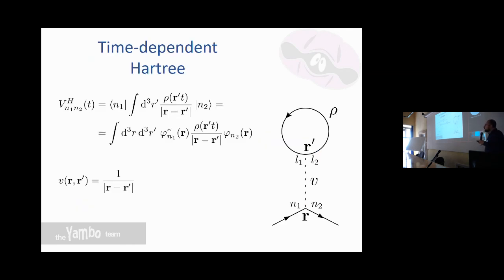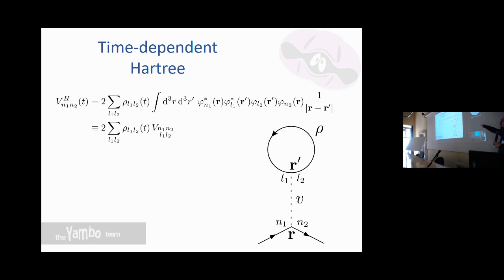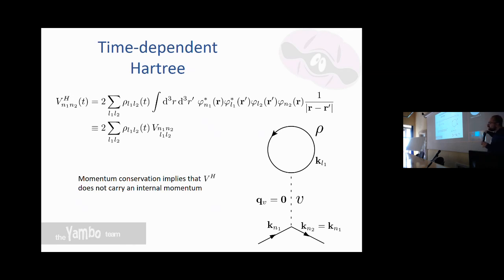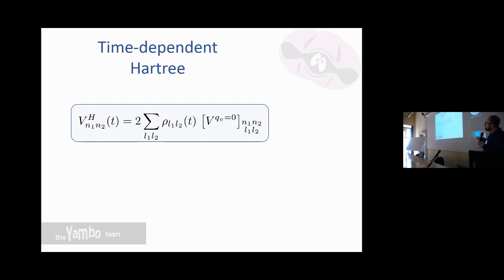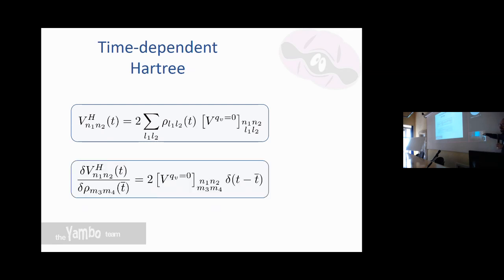For the Hartree potential, we write the full expression in the single-particle basis, expand the density in that basis, and the matrix element of the Coulomb interaction appears. Because of momentum conservation, this Hartree potential does not carry an internal momentum — it just has the momentum of the external electric field. Since it does not depend on ρ, taking the functional derivative just gives v. This is what Maritza called the exchange part of the Bethe-Salpeter kernel.